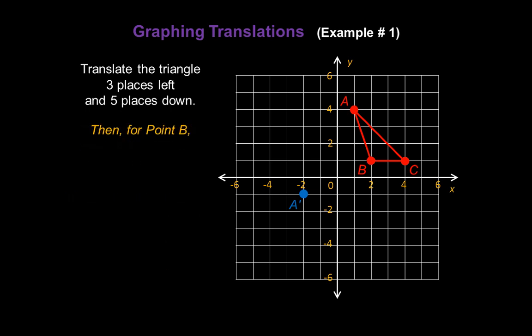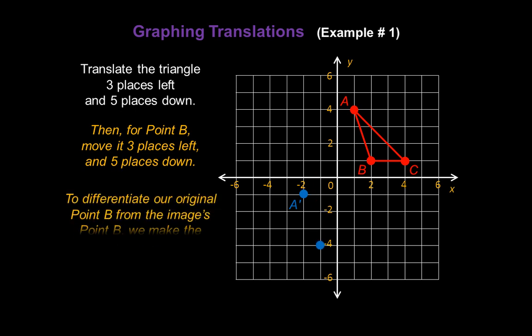Now let's work with point B. Move it three places to the left: one, two, three. And then, of course, five places down: one, two, three, four, five. Again, to differentiate our original point B from the image's point B, we're going to make this point B prime.